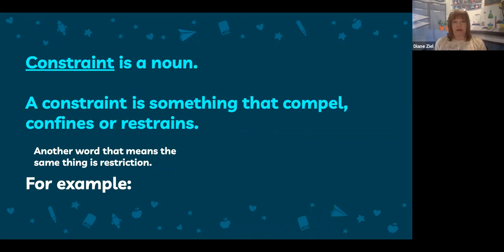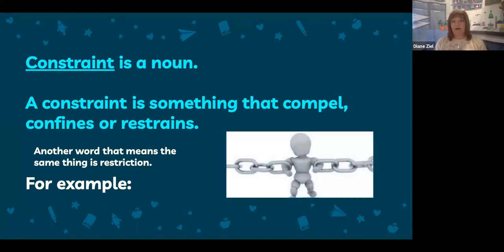Constraint. Constraint is also a noun. A constraint is something that compels, confines, or restrains — in other words, it's something that keeps you from moving forward in your solution. Another word that means the same thing is restriction. For example, you see chains on this little figure — those chains are preventing him from moving his arms the way he wants to. Those chains are an example of a constraint: a restriction or something that keeps you from solving a problem.